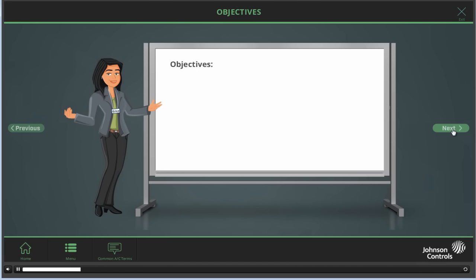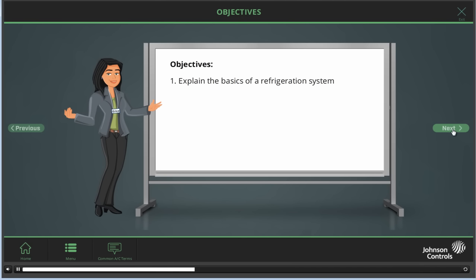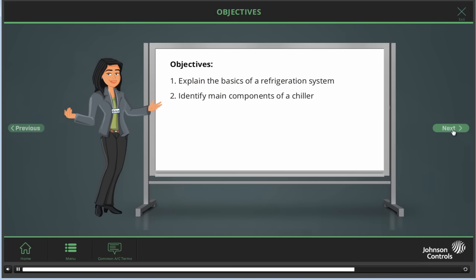Let's review the objectives of this module. First, I'll explain the basics of a refrigeration system. Next, I'll identify the main components of a chiller. And finally, I'll describe how air-cooled and water-cooled chillers function.